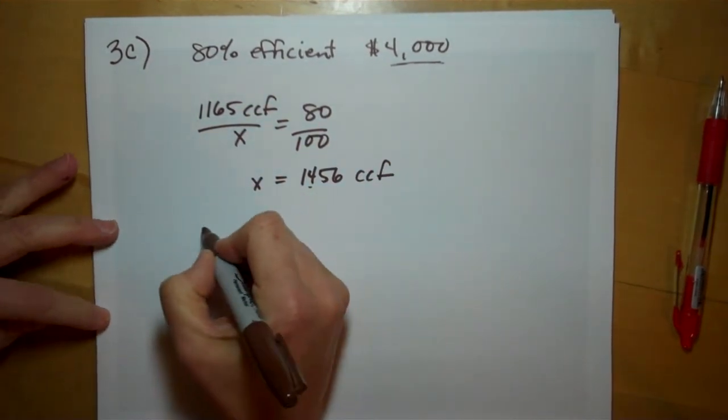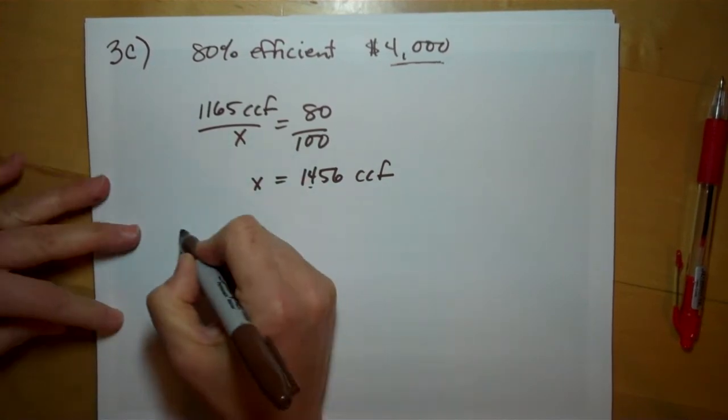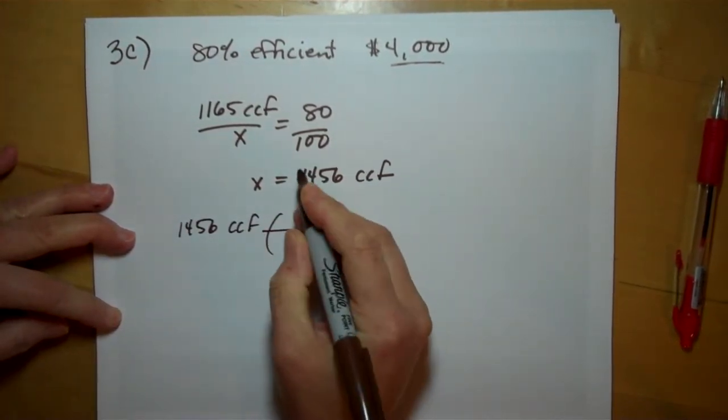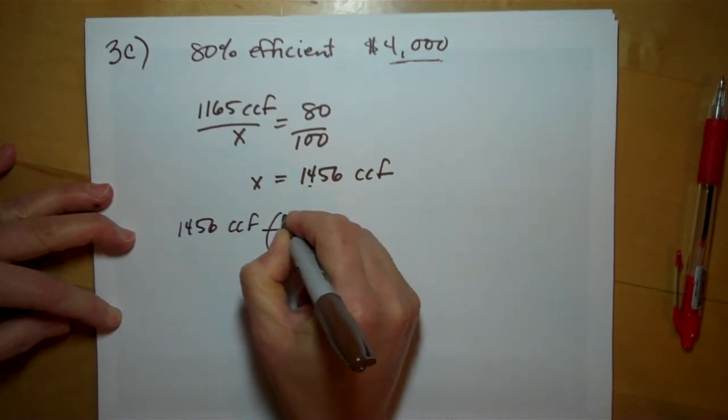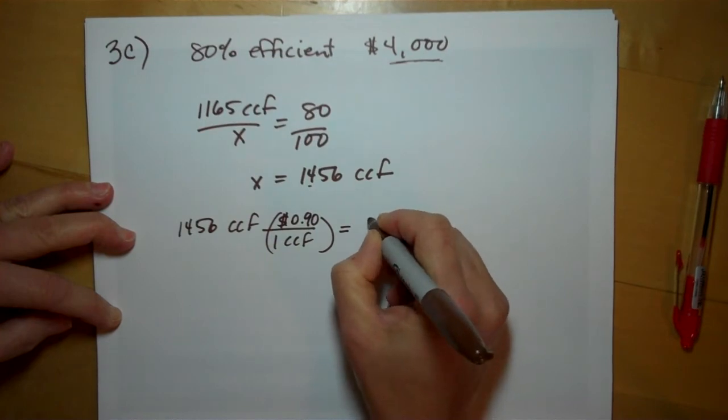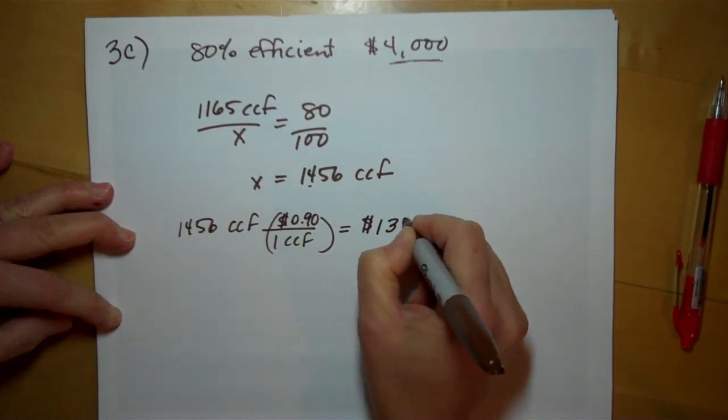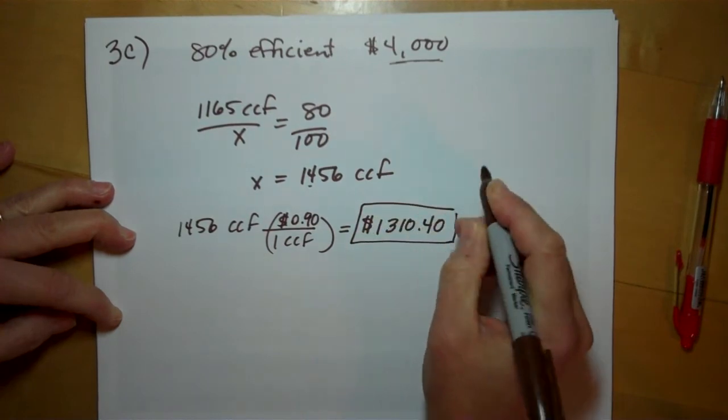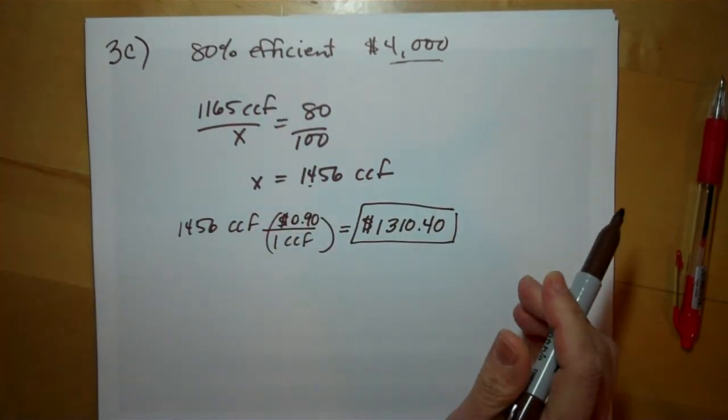And if we know the cost, 1 ccf costs 90 cents, so it's going to cost us $1,310.40 each winter to run this new, more efficient furnace.